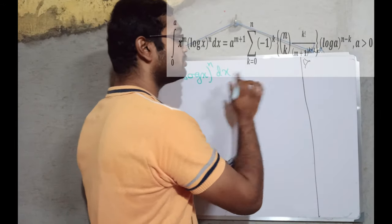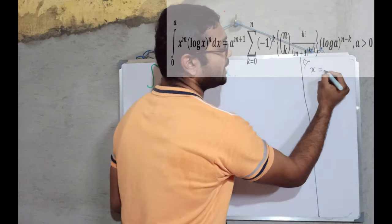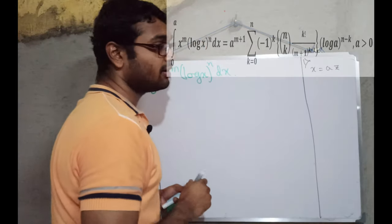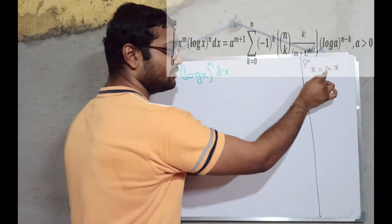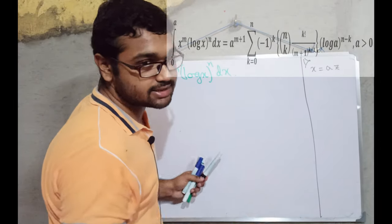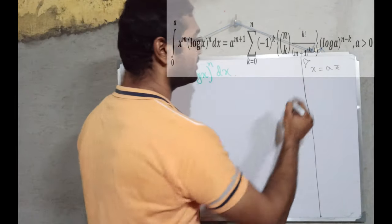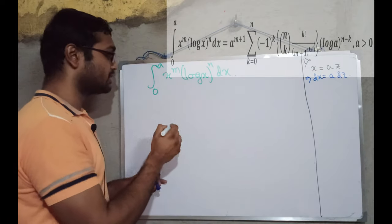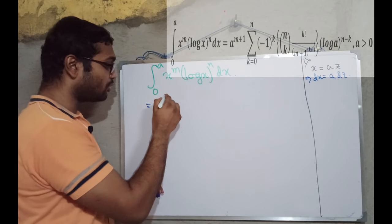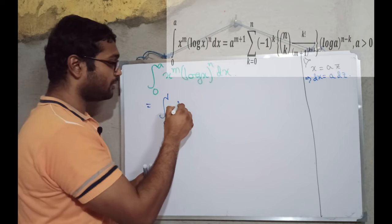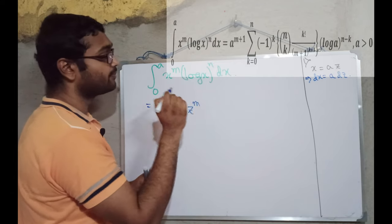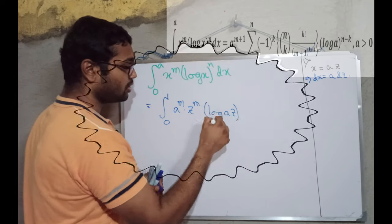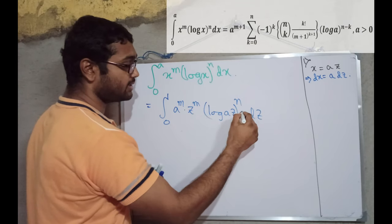Yes, if we substitute this x with a into some kind, let it be z, then the job will be done. How? When x is a, then z will be 1. When x is 0, z is again 0. So, this dx will be a dz. And now let's do the substitution here. This one is from 0 to 1. Now, x is a to the power m times z to the power m. Log of x is log of az whole to the power n dz, obviously.